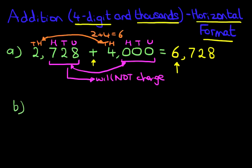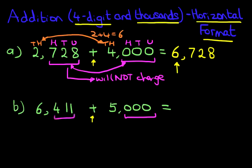Okay, let's have a look at another one. This time we've got 6,411 plus 5,000. Now, again, the same principle applies. We've got three zeros and we've got 411. So we're adding these together. So it's going to remain 411.